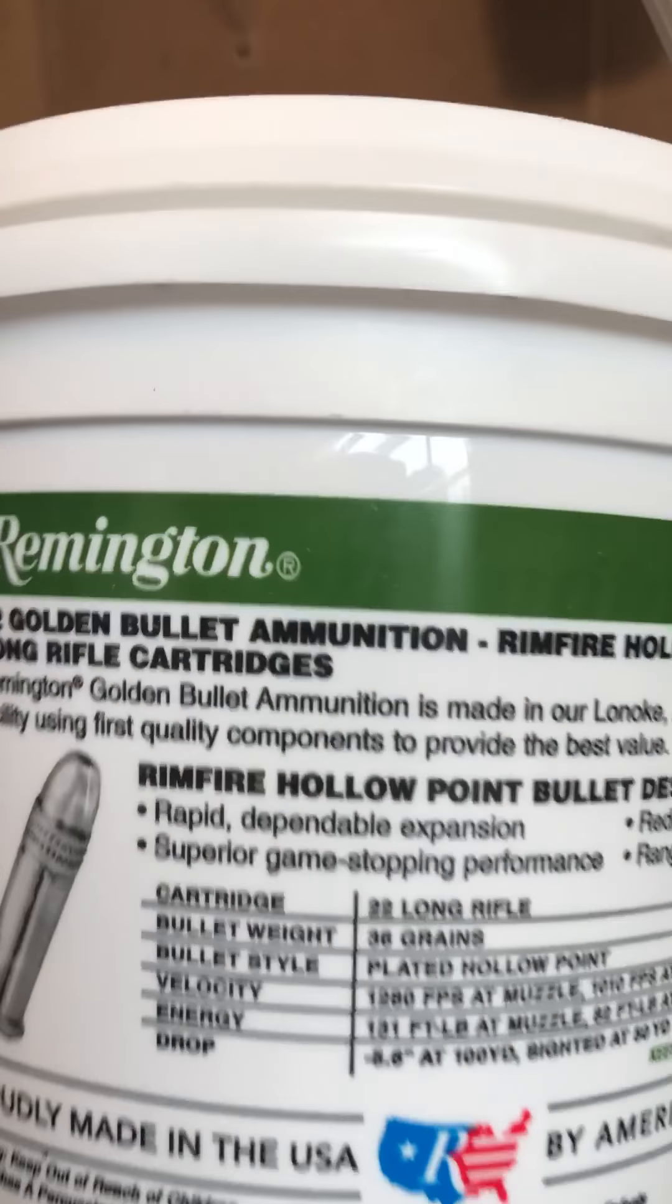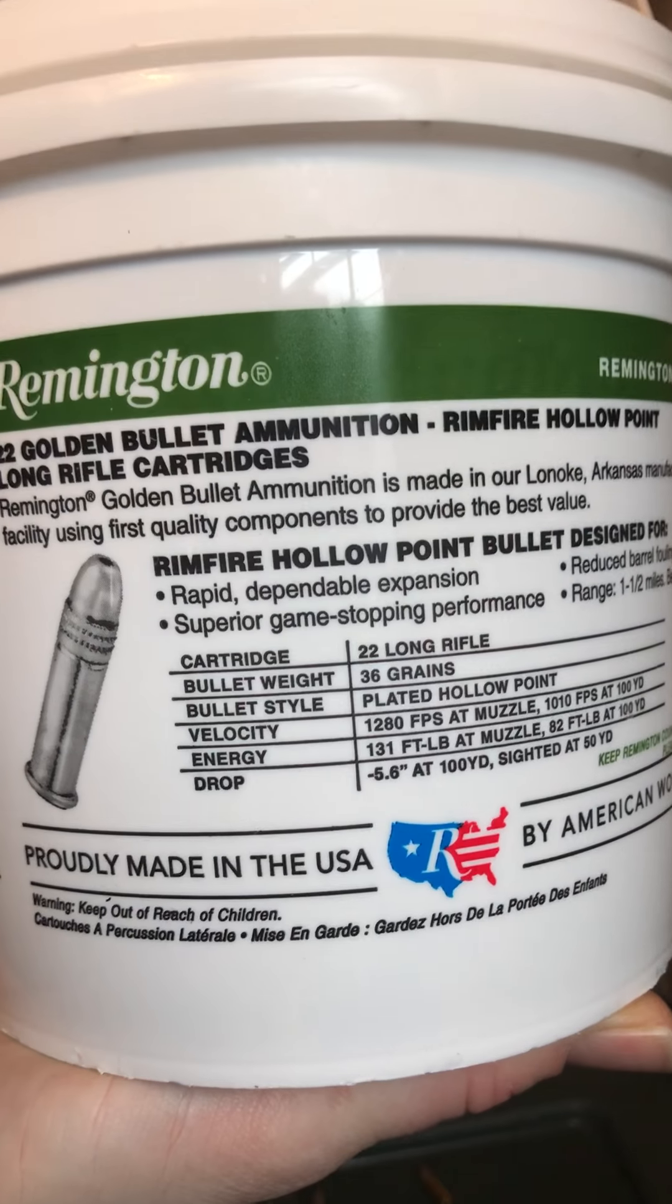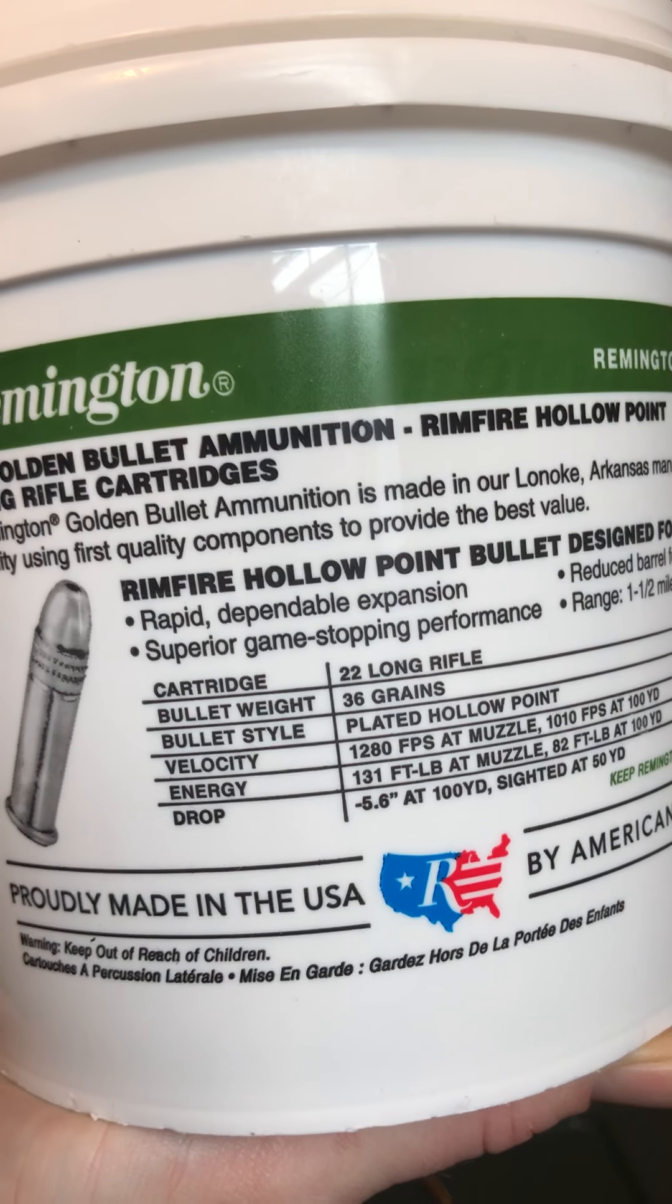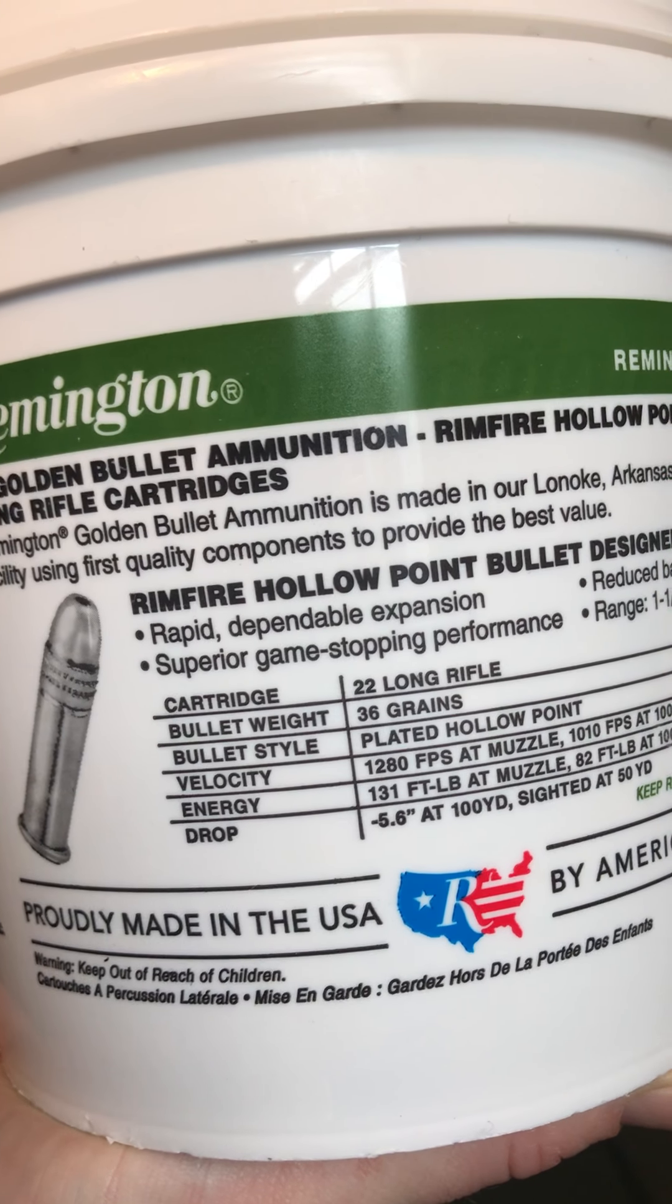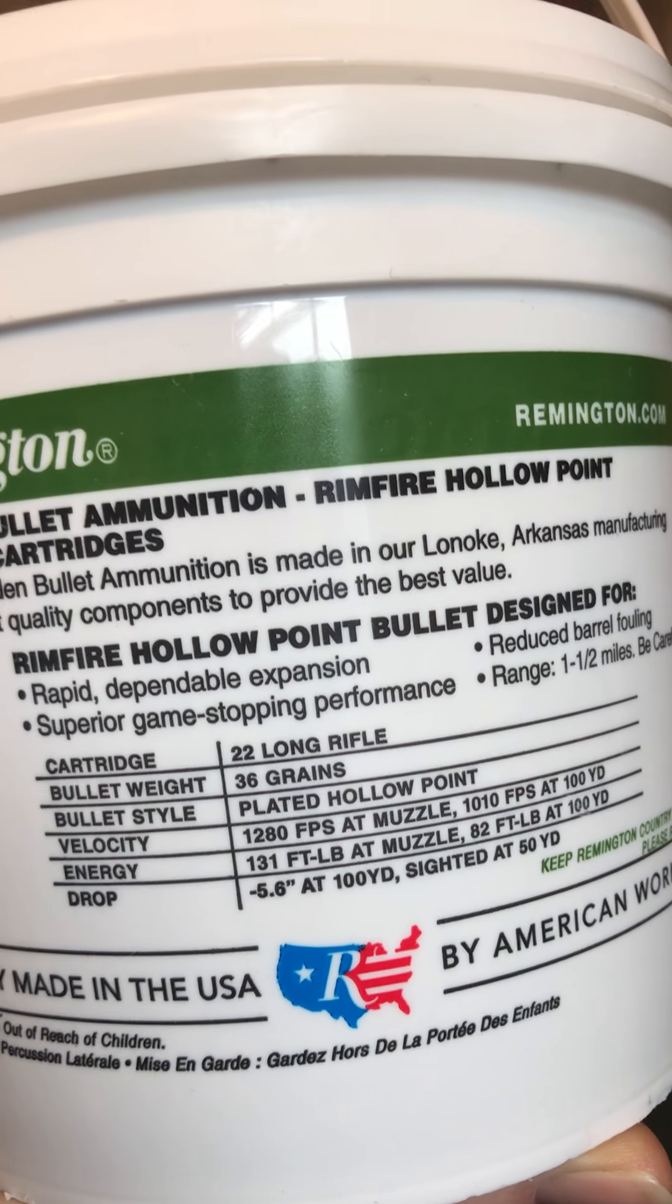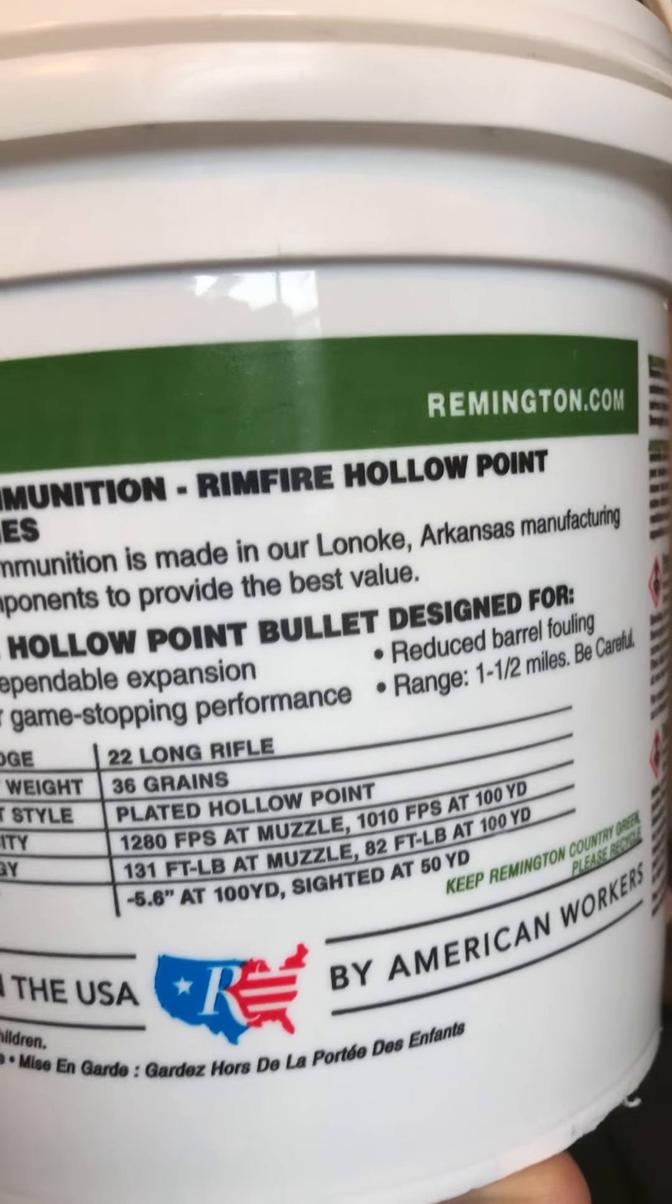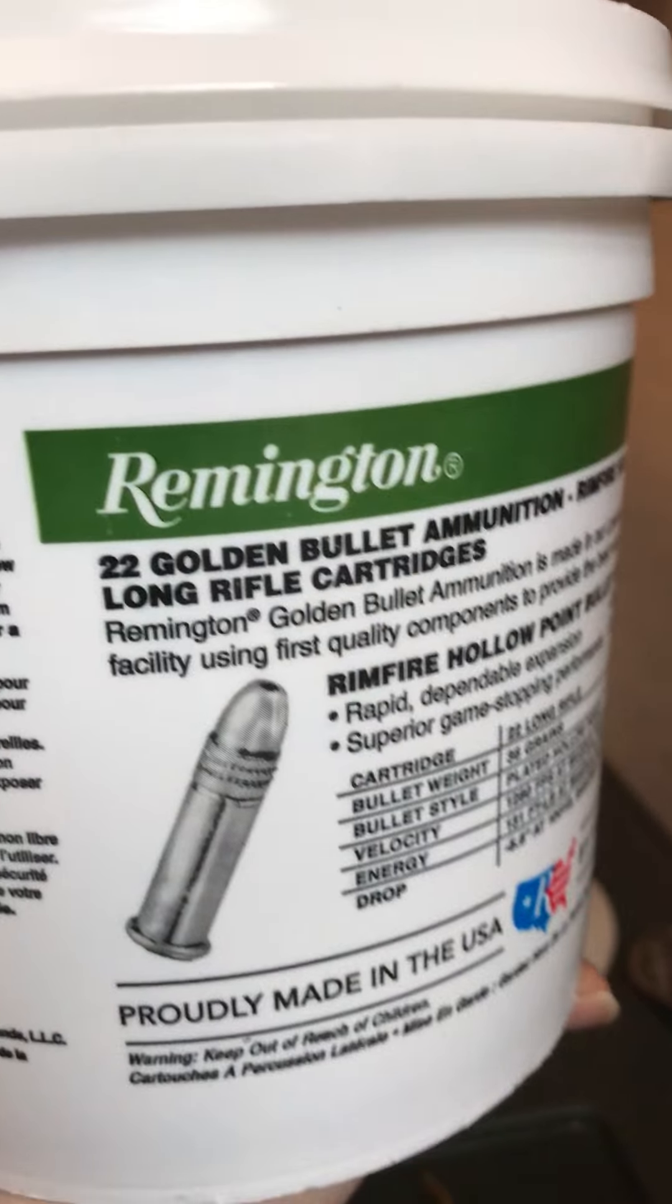Here's some of the ballistics - the bullet weighs 36 grain plated hollow point, 1280 feet per second at the muzzle. There's more of the information there, and this is the golden bucket of bullets here.